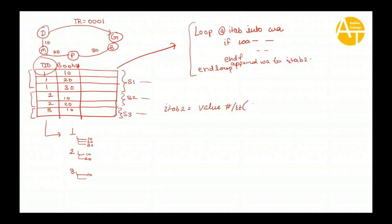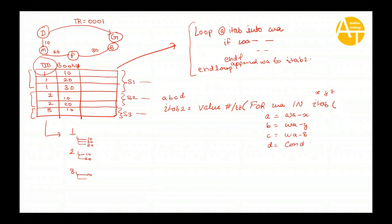Then you use the loop-like syntax — FOR is a keyword, and you put a work area. This work area will be automatically declared by the system; you don't have to declare it manually. Then you provide the mapping. For example, if ITAB2 has fields A, B, C and ITAB1 has fields X, Y, Z, you say: field A in the target maps to work area-X, field B maps to work area-Y, field C maps to work area-Z. Additionally, you can provide conditions — for instance, set field D to a hard-coded value or a condition expression.